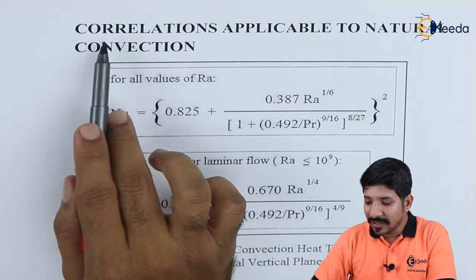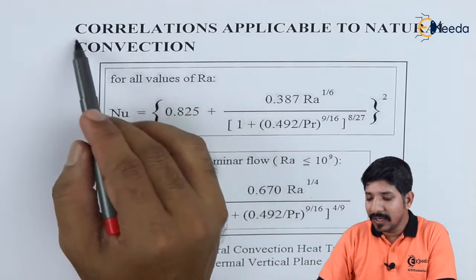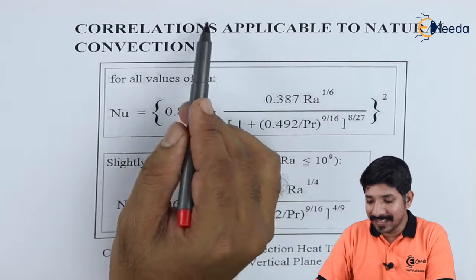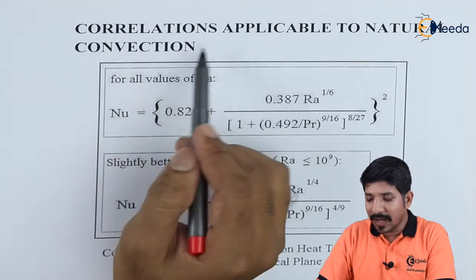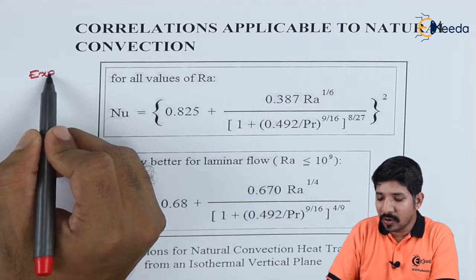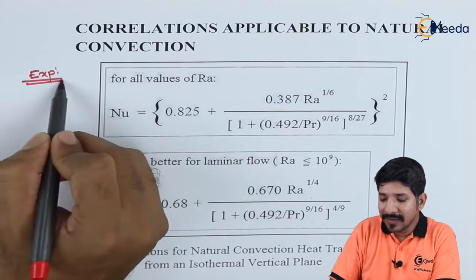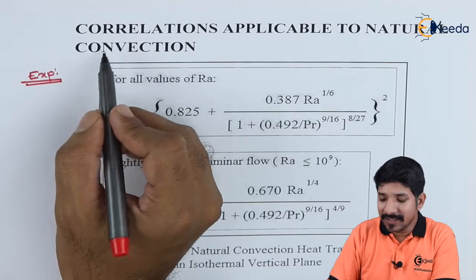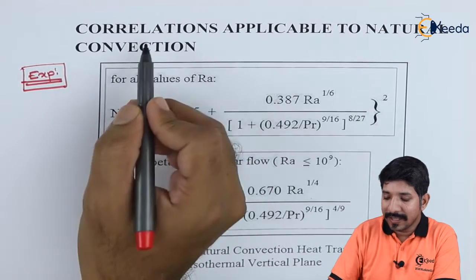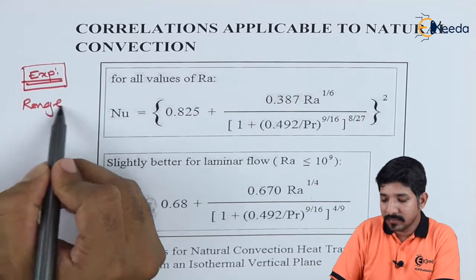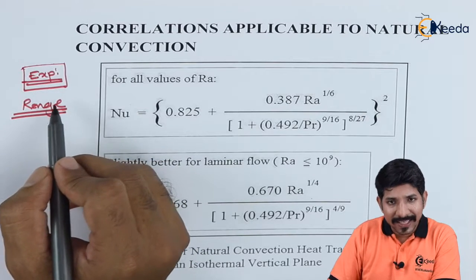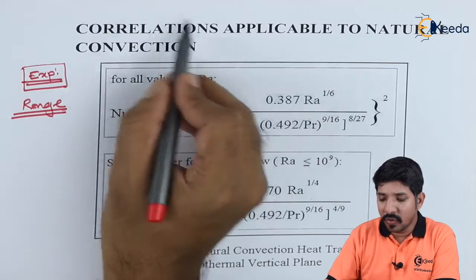The first thing to understand is correlations. These are nothing but the relationship between various variables which are essential for the analysis. These correlations are nothing but the product of various experiments. A person conducts a lot of experiments, and these experiments in turn give us those correlations. These correlations are always bound under a range, so for various parameters the range has to be decided, and for that range itself the correlations will be valid.